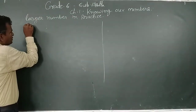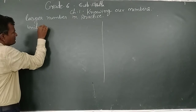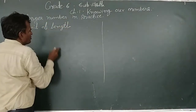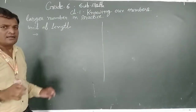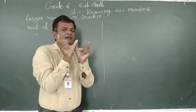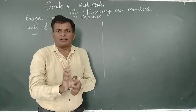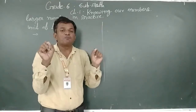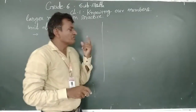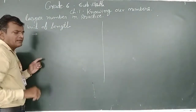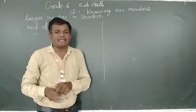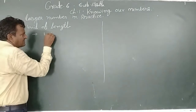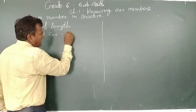Today we are learning units of length. On your small scale, 1 to 15 numbers are given, known as centimeters. When we measure the length of a scale or our books, we use centimeters. There are 10 points in 1 centimeter, so 1 centimeter equals 10 millimeters.